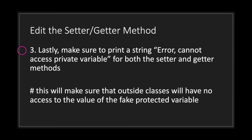You need to declare both a setter and getter method — do not omit anything. Make sure that in your setter and getter methods you print a string. You can choose what you print, but it's best to print something to the console for both methods. This ensures that if you accidentally access your fake protected variable outside of the class, you'll see it in the console. Also make sure you don't return anything in your getter function, and don't actually assign a value to your protected variable in your setter method.